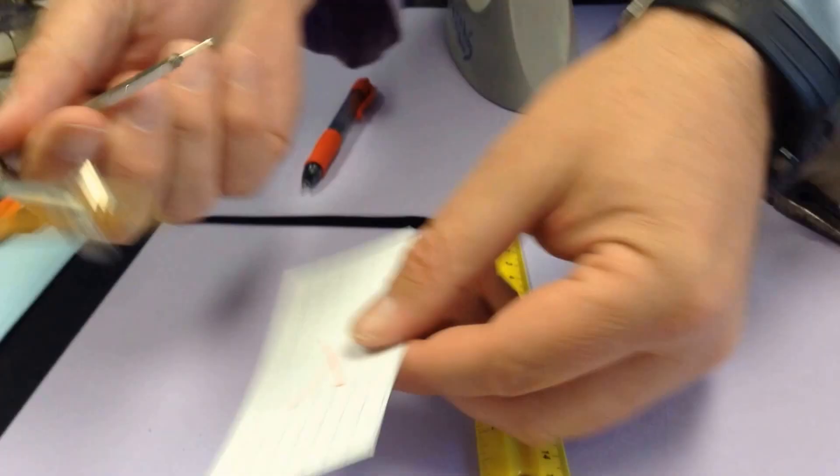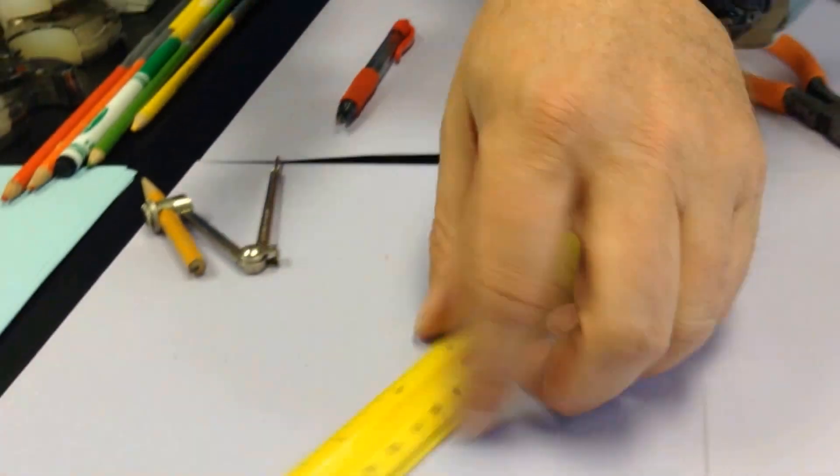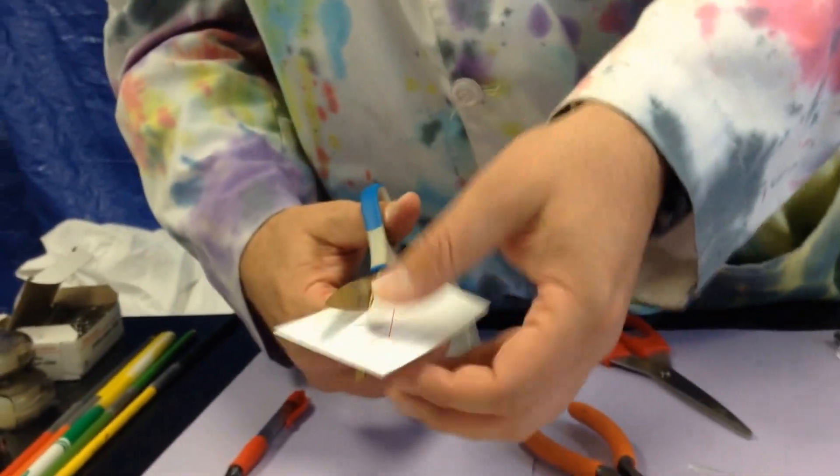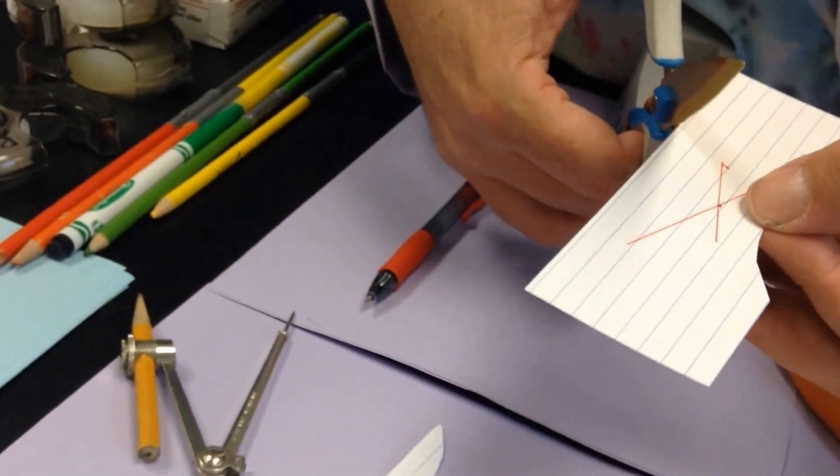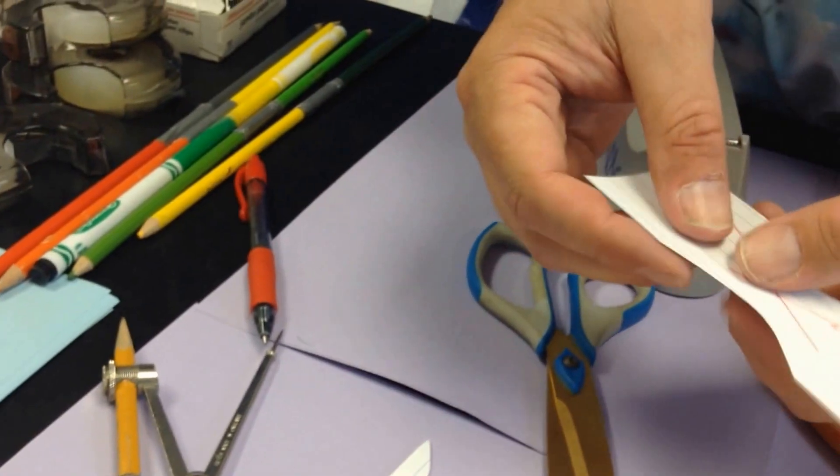Grab a compass and punch a hole in that center. Then what I like to do is trim a notch on either side of the center. That's totally unnecessary, however I like to do it just to give my fingers something to grab onto.